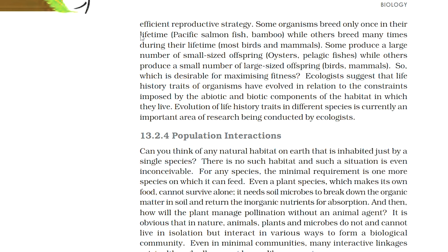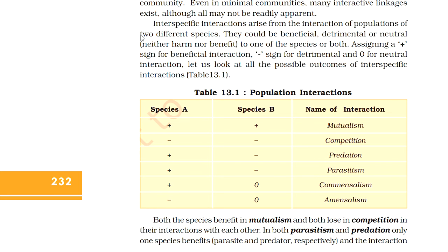13.2.4 Population Interactions. Can you think of any natural habitat on earth that is inhabited just by a single species? There is no such habitat. For any species, the minimal requirement is one more species on which it can feed. Even a plant species which makes its own food cannot survive alone — it needs soil microbes to break down organic matter and return inorganic nutrients for absorption, and it needs an animal agent for pollination. In nature, animals, plants and microbes interact in various ways to form a biological community. Inter-specific interactions arise from the interaction of populations of two different species — they could be beneficial, detrimental, or neutral. Assigning a plus sign for beneficial interaction, minus sign for detrimental, and zero for neutral, let us look at all possible outcomes of inter-specific interaction as given in table 13.1.